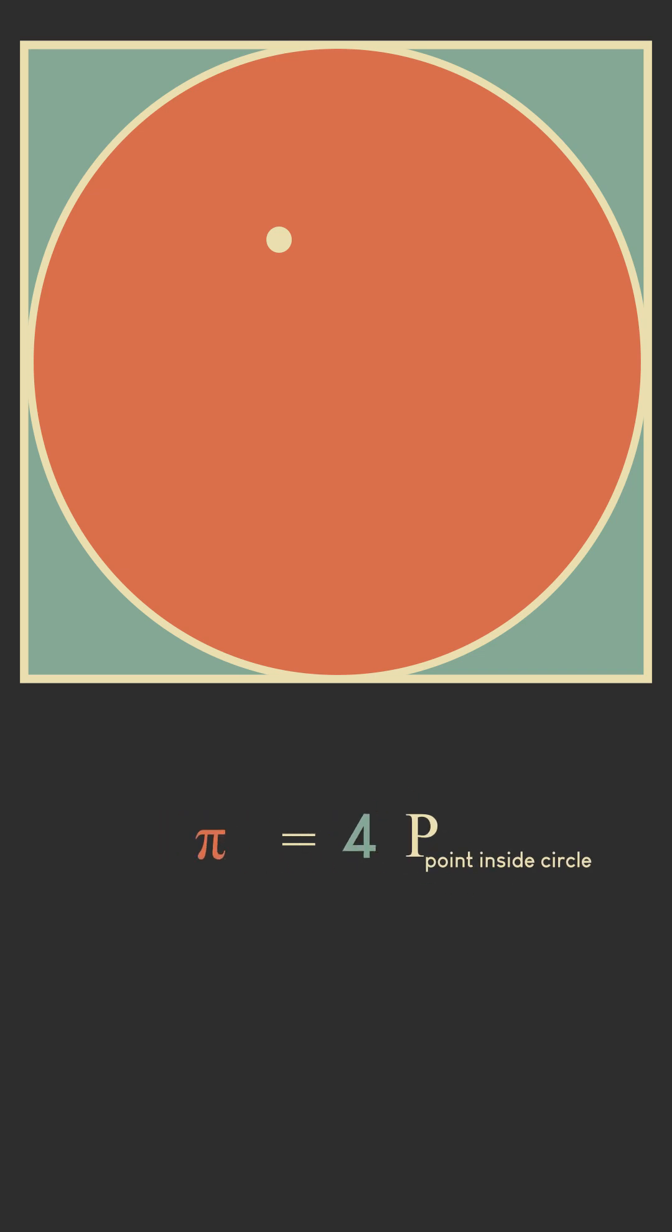Now, if we solve for pi, pi is equal to 4 times the probability of hitting the circle with a random point.